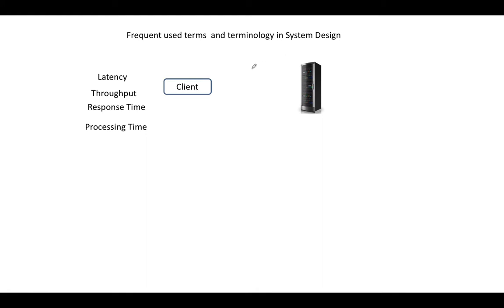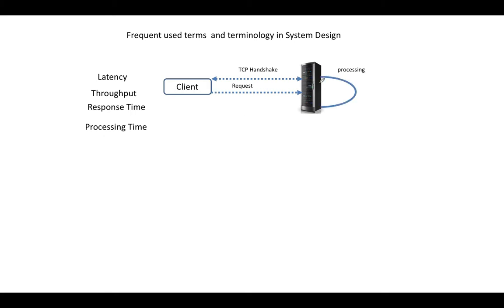Consider this is my client and this is my server. The client will communicate with the server using the HTTP protocol. First, the client does a TCP handshake with the server, and once that is complete, the client sends an HTTP request to the server. The server then does all the processing and computations on its side and sends the response back to the client. This is the simple HTTP communication between the client and the server.